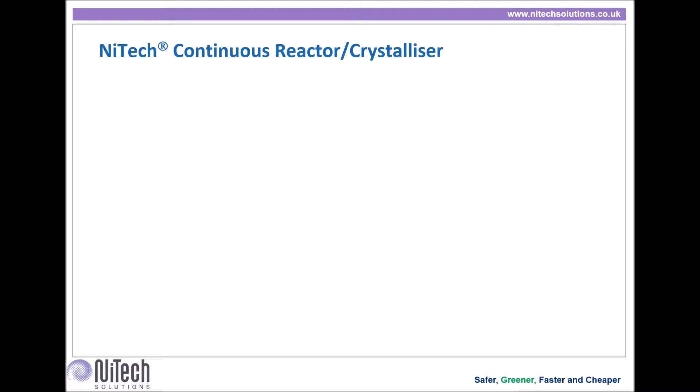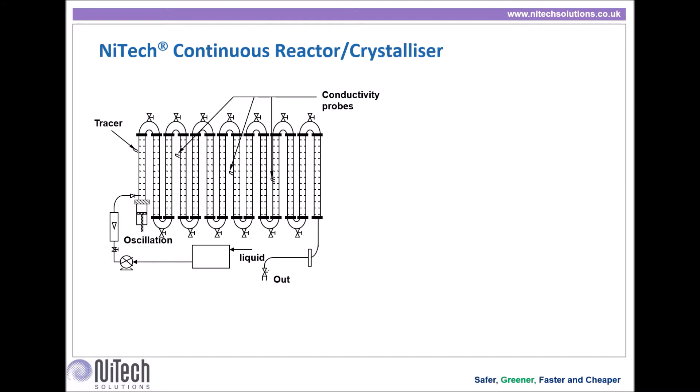How do we operate this process continuously? Orifice baffles are placed along the tubes, including the bends, not drawn in this image. There is an oscillator at the start. The mixing is achieved by the combination of fluid oscillation and the presence of orifice baffles, which decouples the mixing from the net flow. Each baffled cell is uniformly mixed. Next, the accumulation of many well-mixed cells allows us to achieve plug flow.